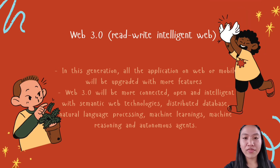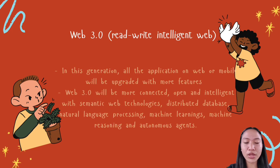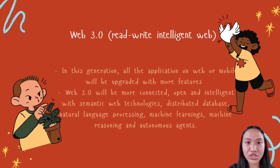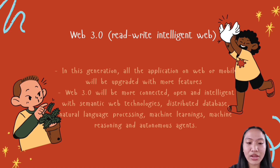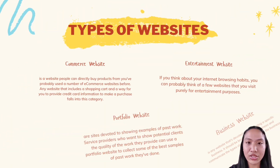Now let's go to our last topic: the introduction to Web 3.0, also known as the Read-Write Intelligent Web. In this generation, all applications on web or mobile will be upgraded with more features. Web 3.0 will be more connected, open, and intelligent with semantic web technologies, distributed databases, natural language processing, machine learning, machine reasoning, and autonomous agents.